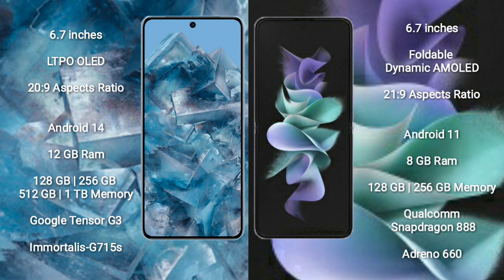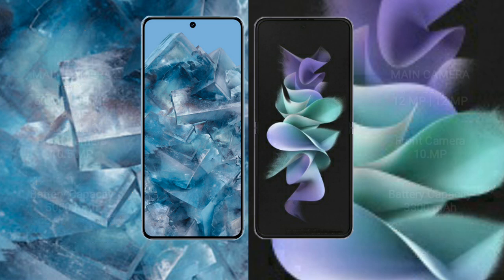Google Pixel 8 Pro comes with 12GB RAM and 128GB, 256GB, or 512GB internal storage options, powered by the Google Tensor G3 processor with GPU Mali-G715s. Samsung Galaxy Z Flip 3 comes with 8GB RAM and 128GB or 256GB internal storage, powered by the Qualcomm Snapdragon 888 processor with Adreno 660 GPU.